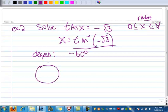And then I look at my unit circle and I say, well, I know where that is. Negative 60 degrees is right here. But wait, the problem is between 0 and π.